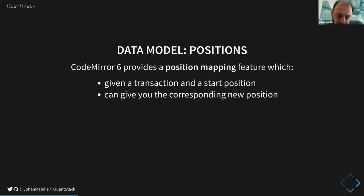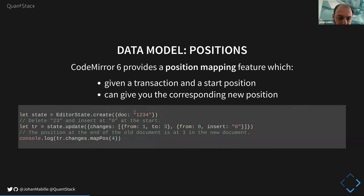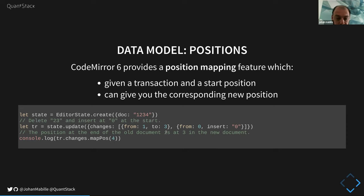CodeMirror 6 provides a position mapping feature. When you want to do some changes you may want to know the ending position of your change in the new document after insertions and deletions. That's what we have in the transaction object — more precisely in the changes of the transaction object. For example, if we start with a document '1234' and have two changes — deleting characters from 1 to 3 and inserting '0' at the beginning — we can map to know that position 4 in the old document is position 3 in the new document.